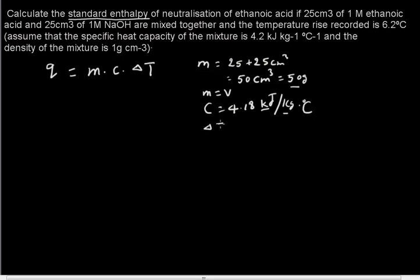ΔT is the change in temperature, it's given to you, 6.2°C. We need to plug these three values, but we cannot plug the mass as 50 g because the C value is in kilojoules per kg. We need to convert the mass in grams to kilograms. That is 50 divided by 1000, which is 0.05 kg.